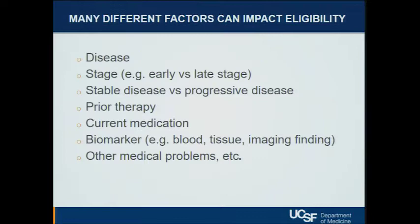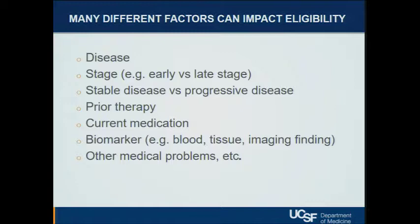Eligibility is probably the biggest take-home from this talk, certainly as a patient or patient advocate — this is the bread and butter of trials. You have to look carefully at: what disease, what stage, is it newly diagnosed or advanced disease, or someone very high-risk for developing the disease. Some studies specify whether disease is stable or progressing at entry. Prior therapy can matter. Current medications sometimes matter, especially for oral drugs where there can be drug-drug interactions. Is a biomarker required? And are other medical problems a factor? For example, with immunotherapy, if a patient has an active autoimmune disease, they might not be eligible, since one side effect is reactivation of autoimmune events.